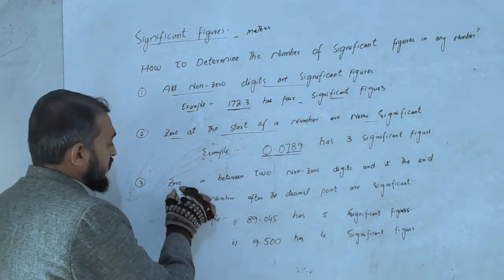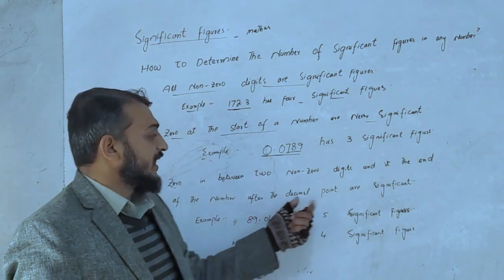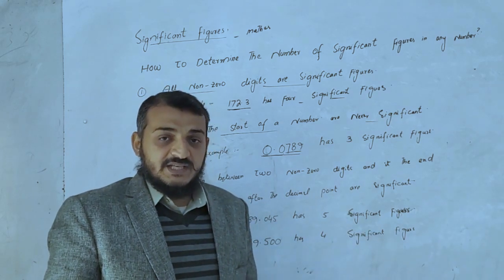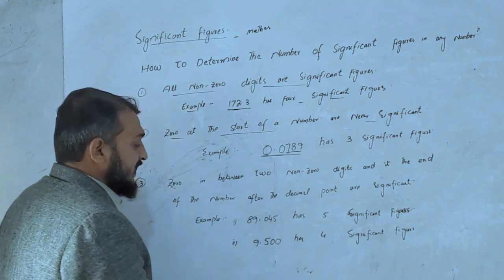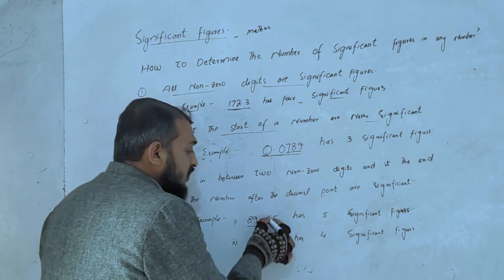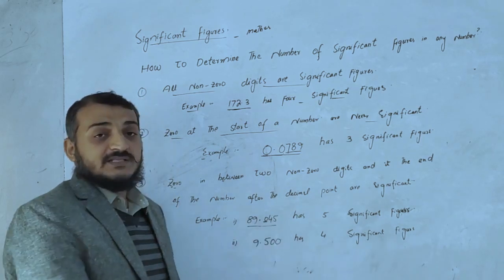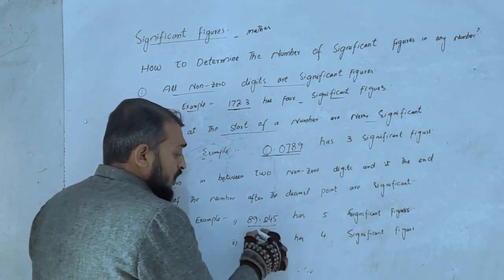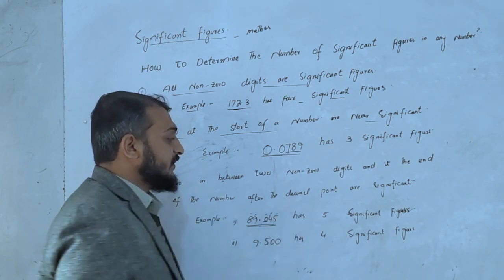Rule 3: zeros in between two non-zero digits, or at the end of a number after a decimal point, are significant. For example, 8.9045 — here the zero between 9 and 4 is significant, giving us 5 significant figures: 8, 9, 0, 4, and 5.